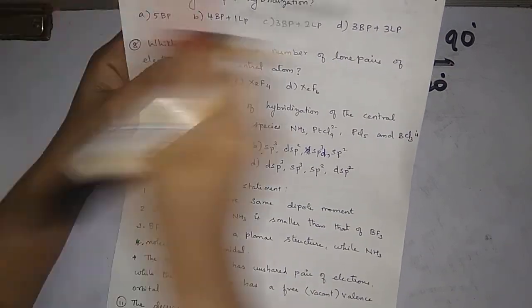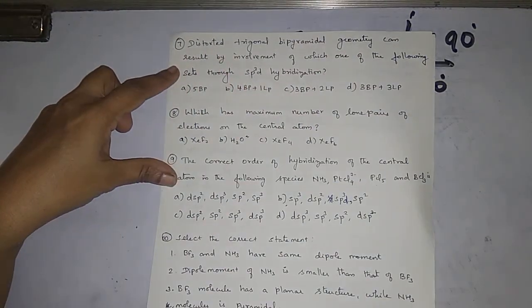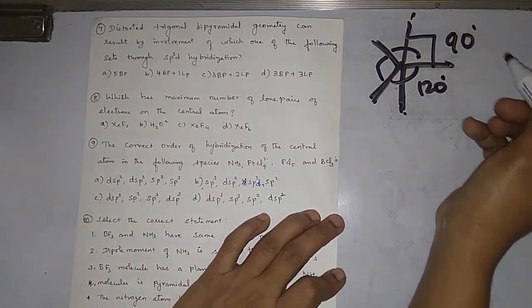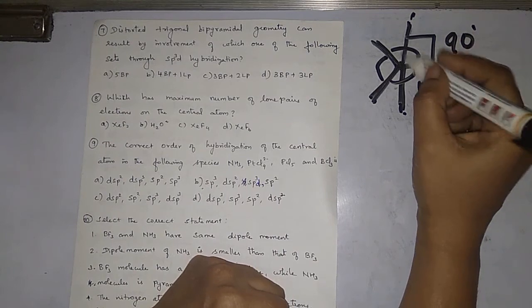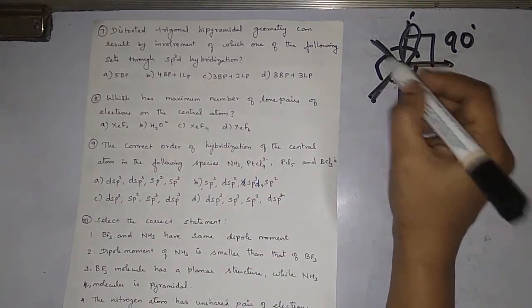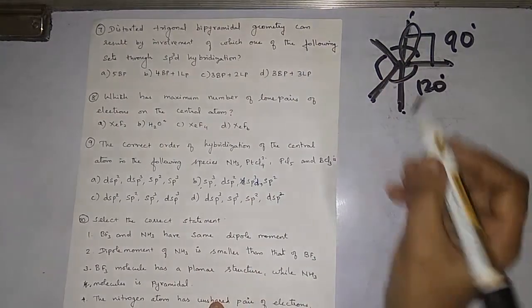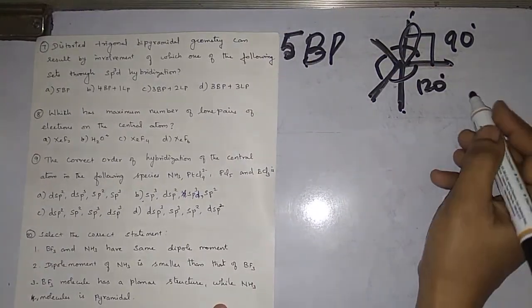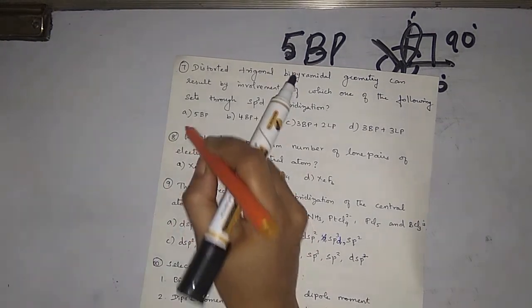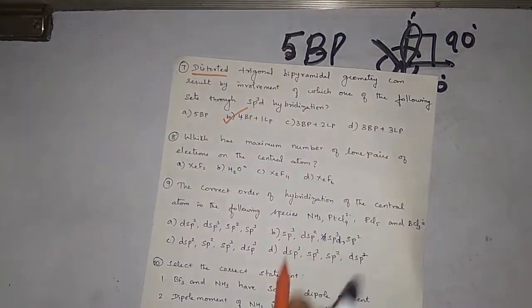Seventh question: distorted trigonal bipyramidal geometry results from which set through sp3d hybridization? A normal trigonal bipyramidal has five bond pairs. If there is one lone pair of electron present, there will be repulsion between the bond pair and lone pair, distorting the shape. So for a distorted trigonal bipyramidal, we need one lone pair of electrons.